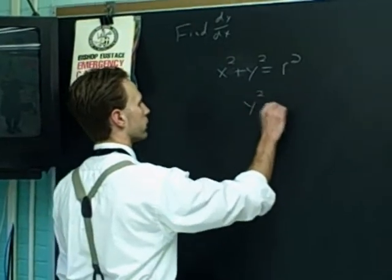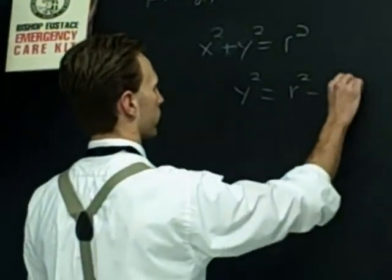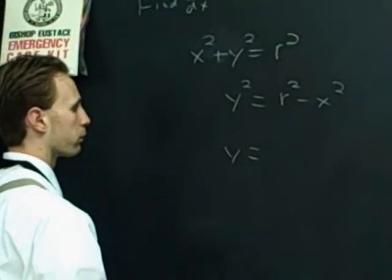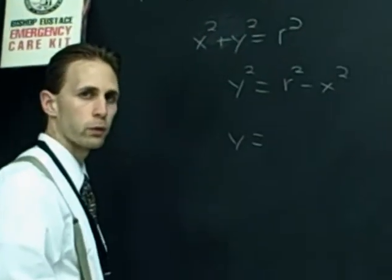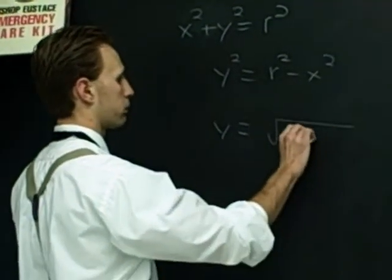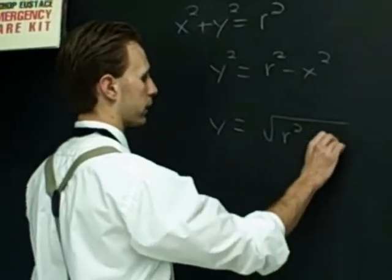So you have y squared equals r squared minus x squared, and so y equals... We have to take the plus and minus square roots, but I only want to deal with the top half of the semicircle. So I'll just say it's going to be positive r squared minus x squared.